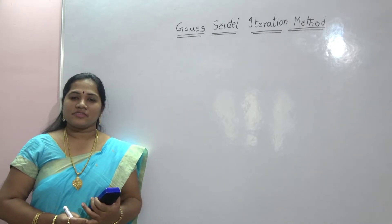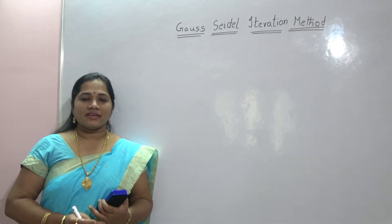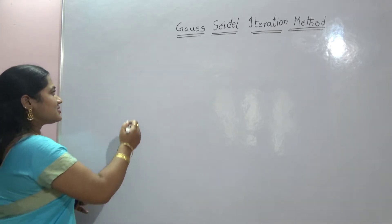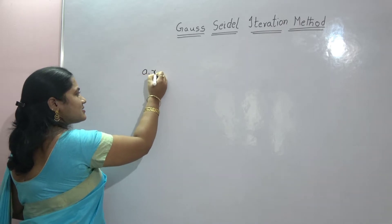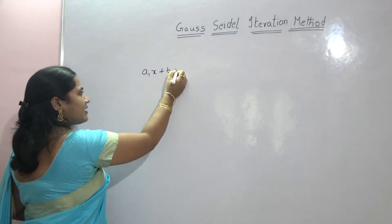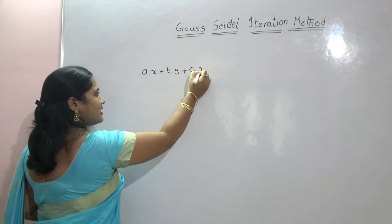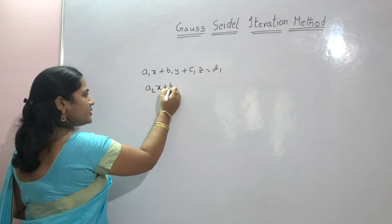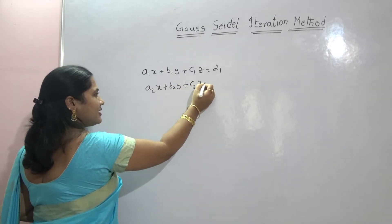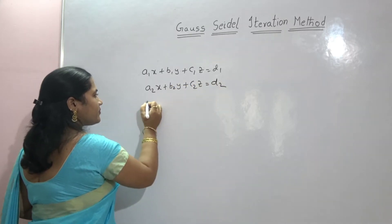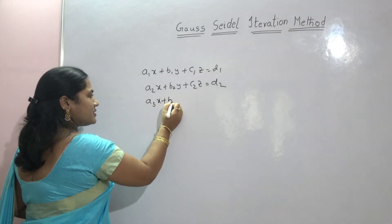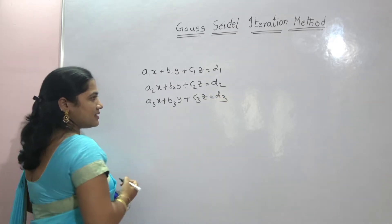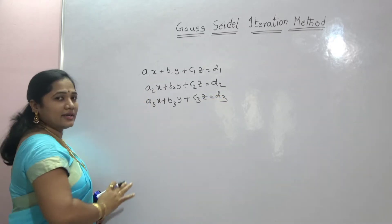This method is a modification of Jacobi's method. First I will explain the working rule, then I will solve one problem. So let us consider the system of linear equations: a1x + b1y + c1z = d1, a2x + b2y + c2z = d2, a3x + b3y + c3z = d3.